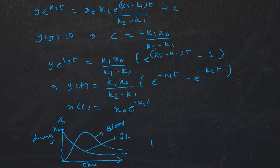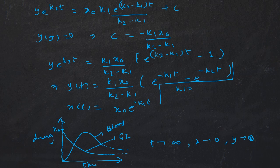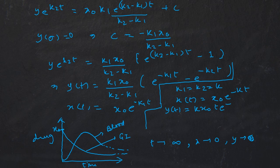As t tends to infinity, x tends to 0 and y tends to 0. Note that these solutions are for k1 ≠ k2. When k1 = k2 = k, you get x(t) = x₀·e^(−kt) and y(t) = k·x₀·t·e^(−kt), which can be obtained by solving the equations in the same manner.